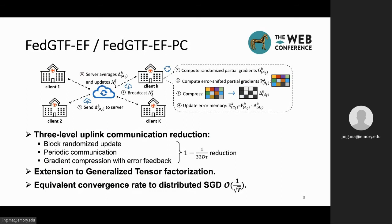We summarize our contributions as follows. First, we employ up to three levels of uplink communication reduction technique and achieved the theoretical communication reduction to 1 minus 1 over 32d tau. D is the number of modes of a tensor, and tau is the local update rounds.